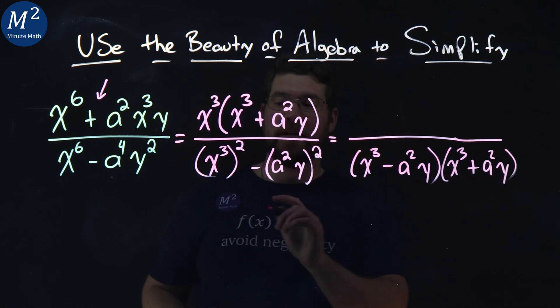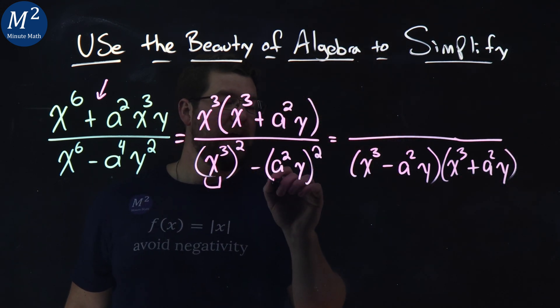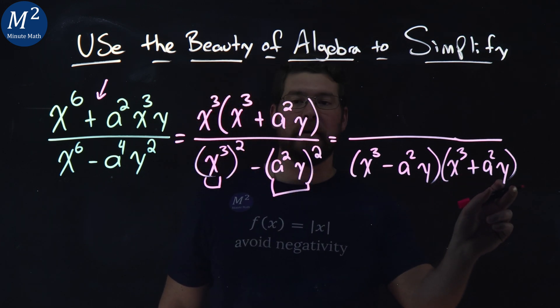That would cancel out. Remember each term we have the x to the third and a squared y is our second term broken up here.